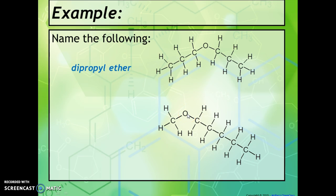The substituent on the left is called a methyl group, and on the right we have one, two, three, four, five carbons, which is a pentyl group.